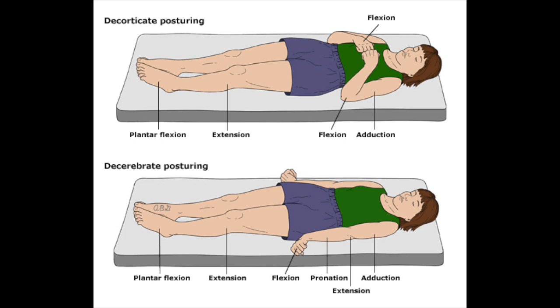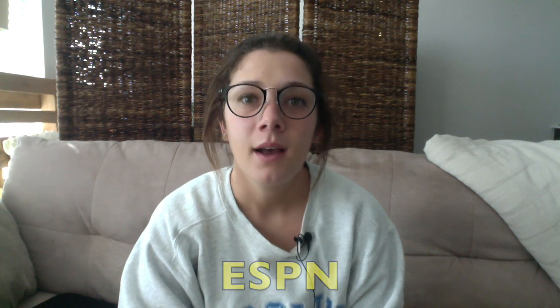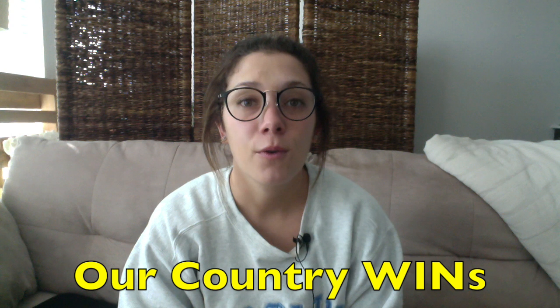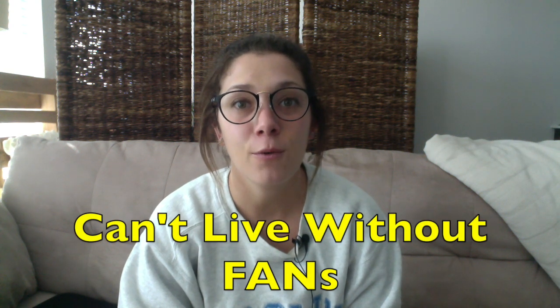Flexion to pain represents decorticate posturing, which consists of upper extremity adduction and flexion at the elbows, wrists, and fingers. Abnormal extension represents decerebrate posturing, which consists of upper extremity extension, abduction, and pronation together with lower extremity extension. And that's it, guys — thanks for listening. Just remember: use the mnemonic ESPN for eye, Our Country Wins for verbal, and Can't Live Without Fans for motor.